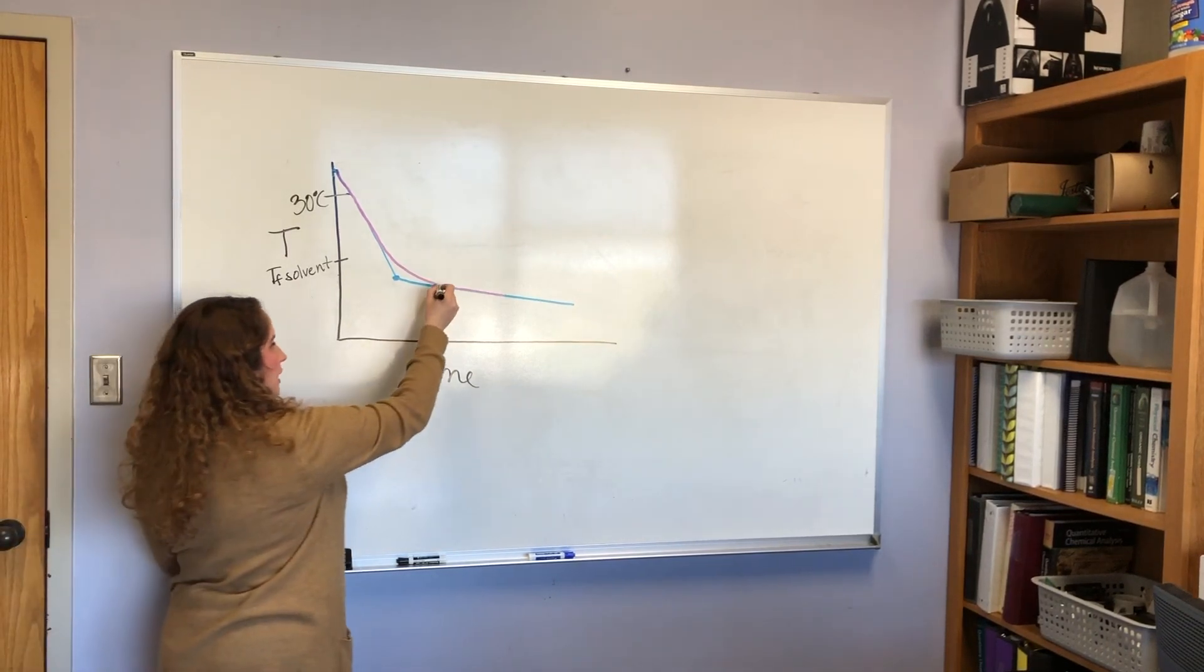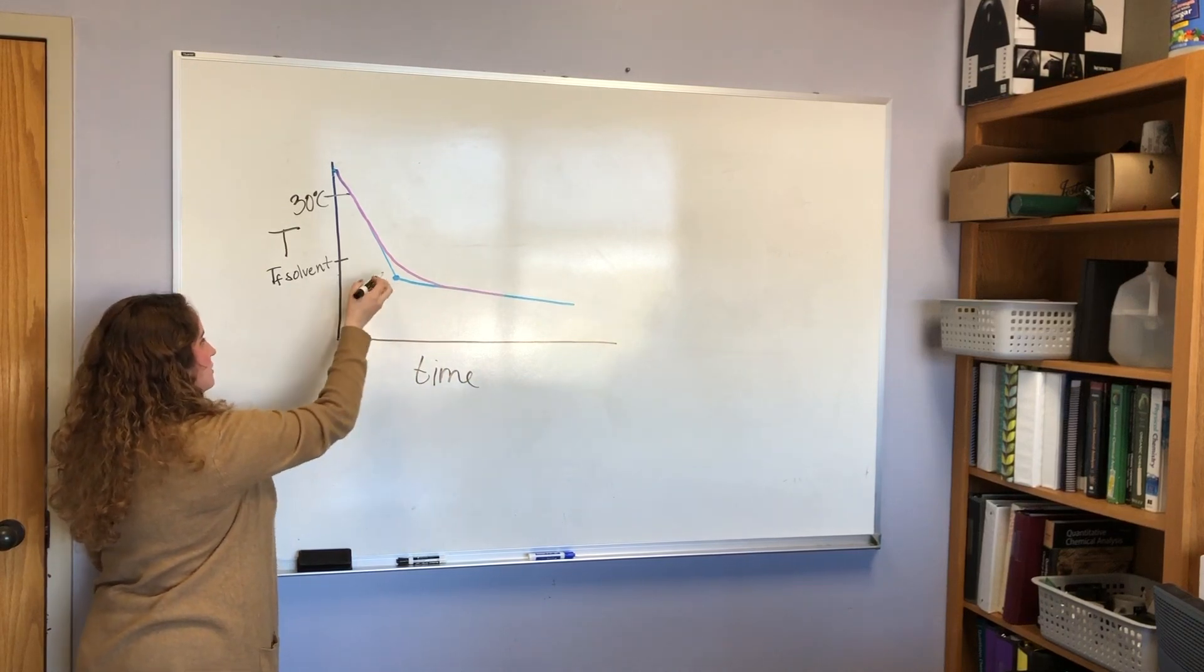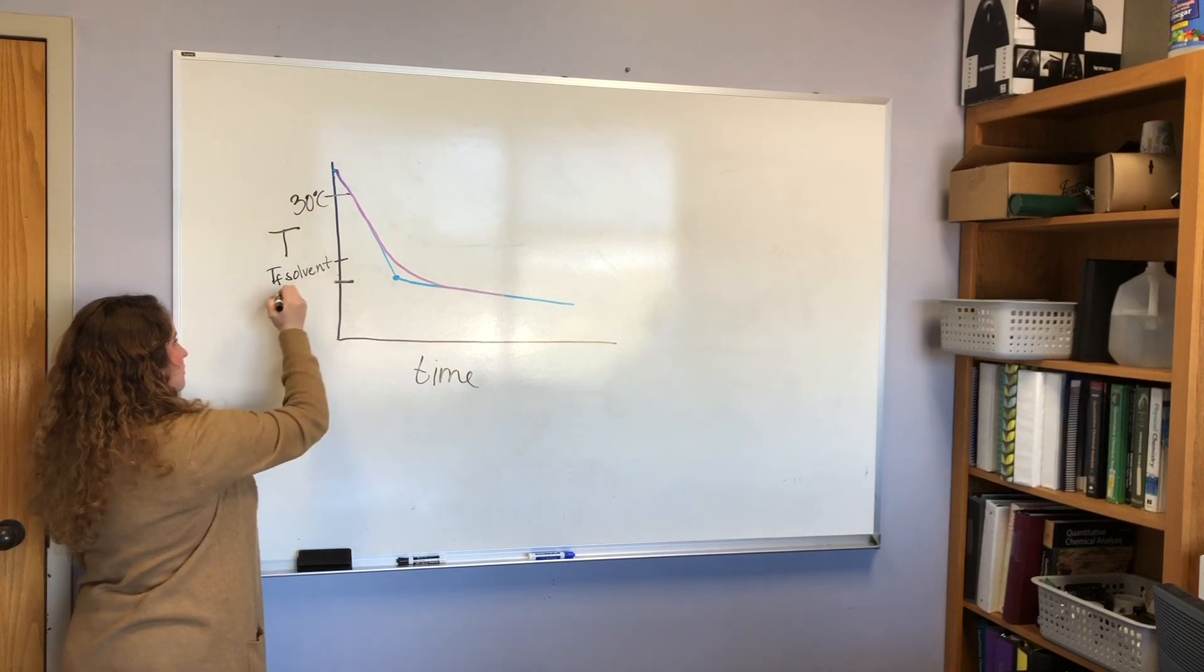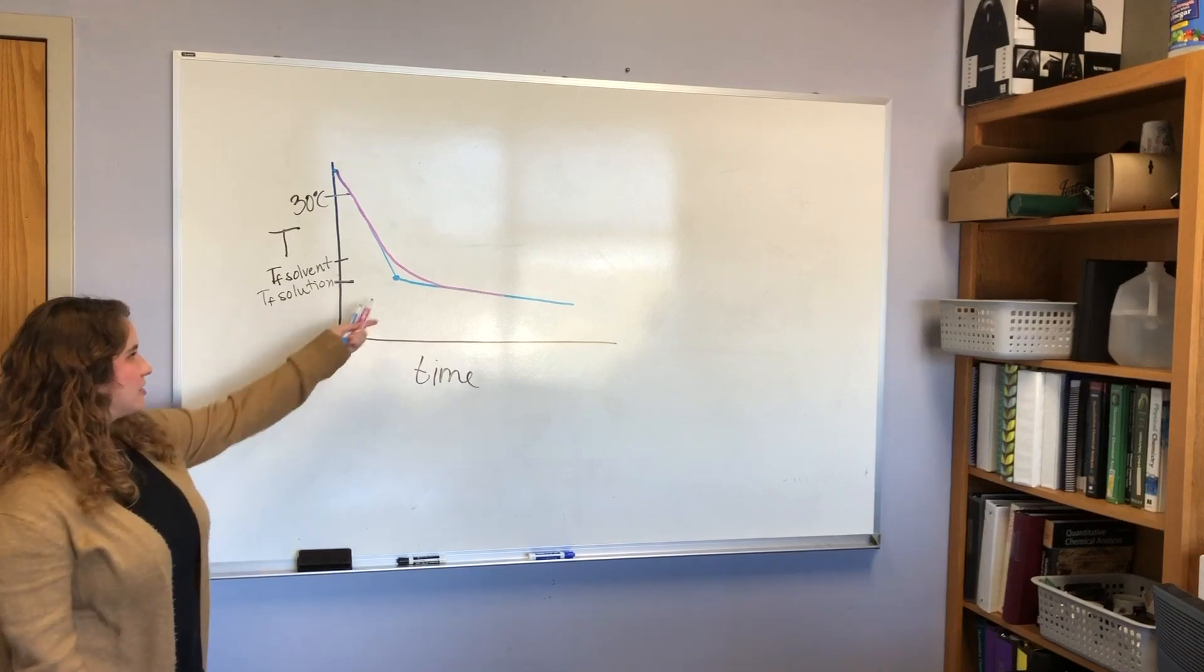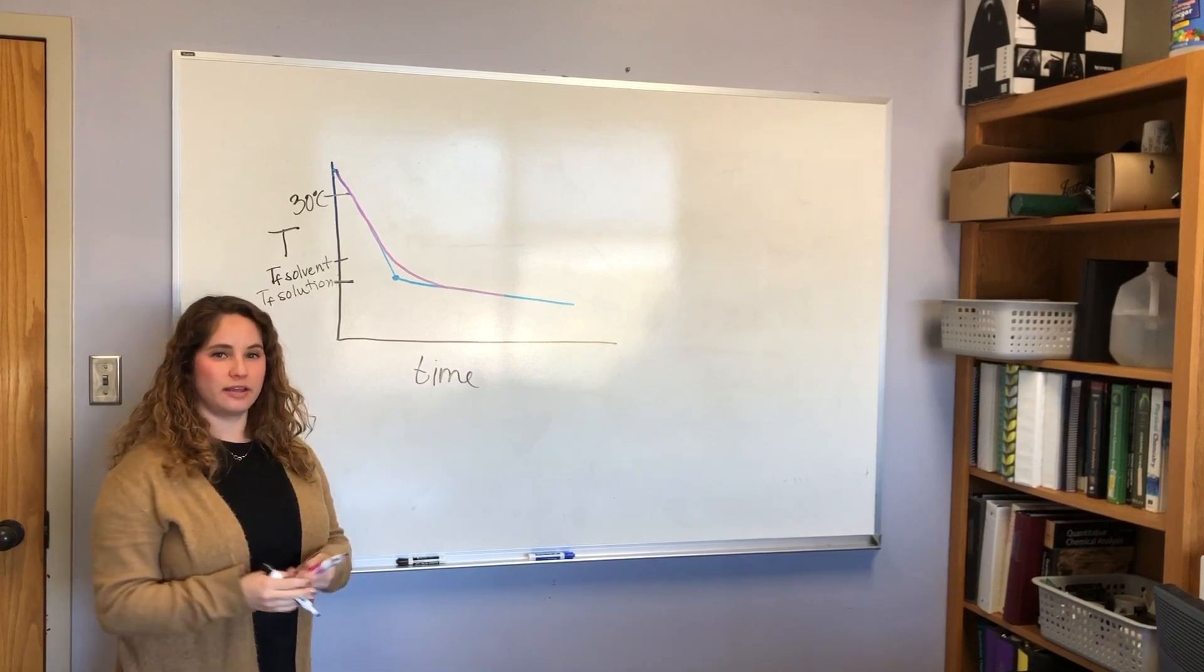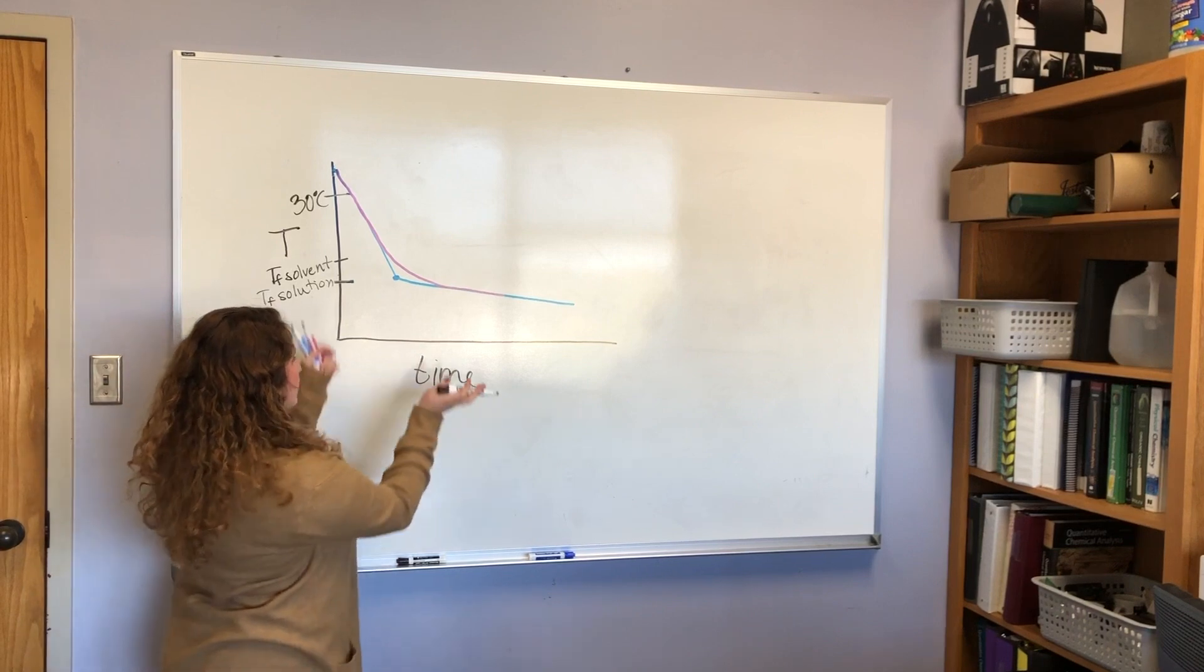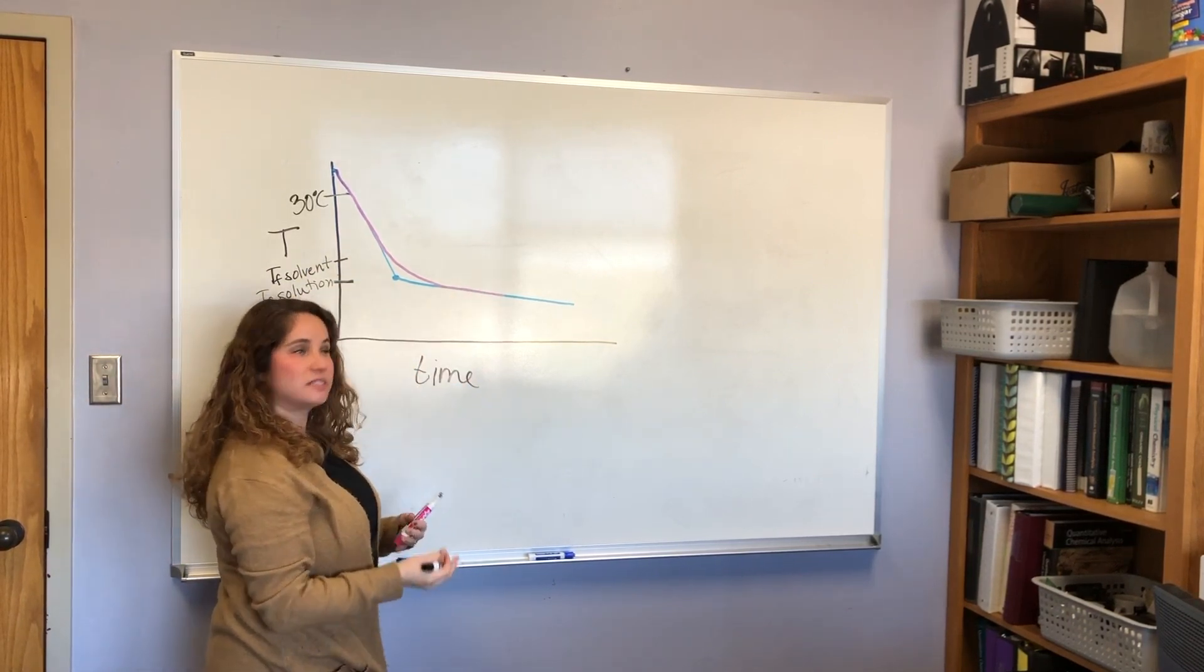So notice our curve does not actually go through the freezing point. And we can't pick a point off of this line because it's not going to be at the same temperature of that freezing point. What we want to know is what temperature did our solution begin to freeze at. And unfortunately for us, that's just not on our data. So we have to get a little creative. You know how to use the curve fitting on a lab quest now.